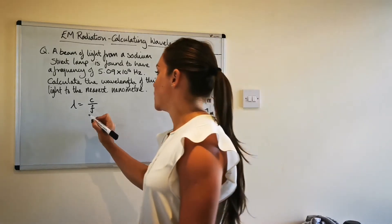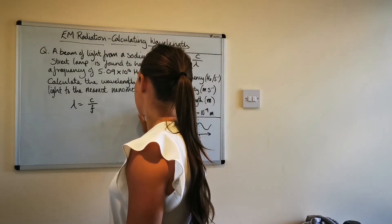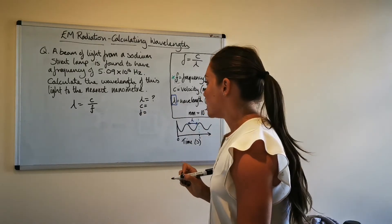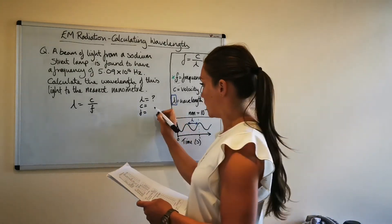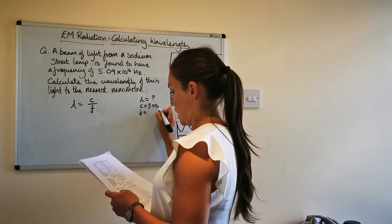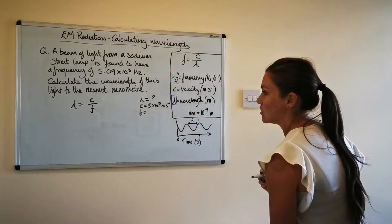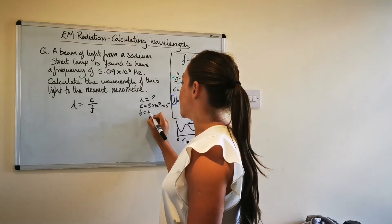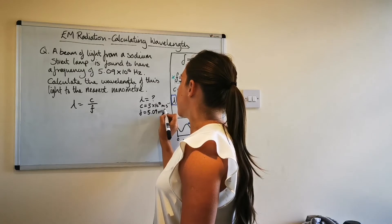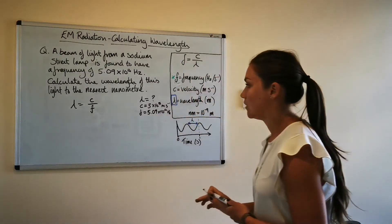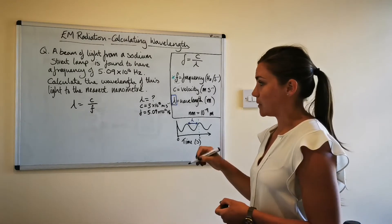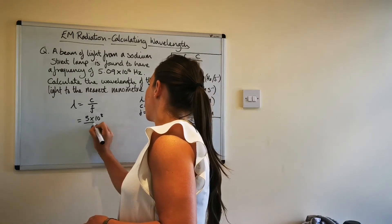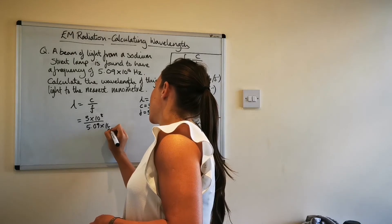So if we then put in the numbers and actually it's quite good to write the constants down the side sometimes and pull out the numbers so lambda is what we're trying to find so I'll put a question mark next to that c is the speed of light constant so that's three times ten to the eight and I like to write the units next to them just to remind myself when I need to convert and then the frequency we've been given in the question so 5.09 times 10 to the 14 hertz. So what we're going to do now is just plug these numbers in so 3 times 10 to the 8 over 5.09 times 10 to the 14.